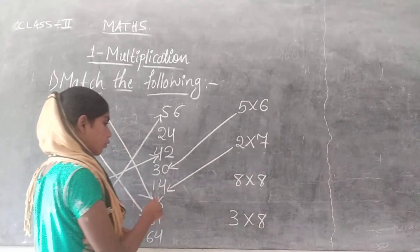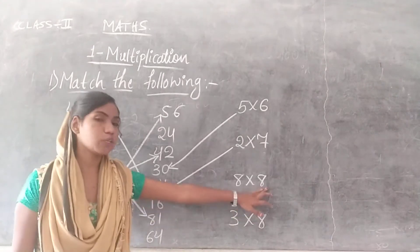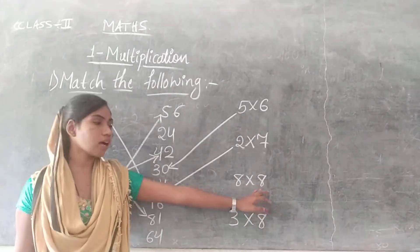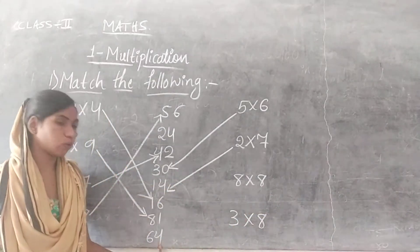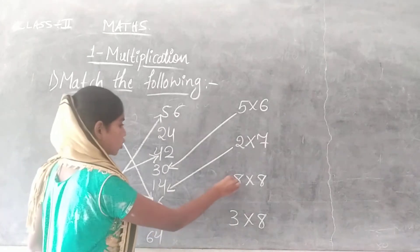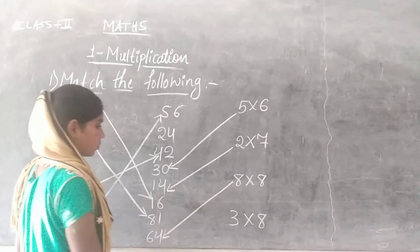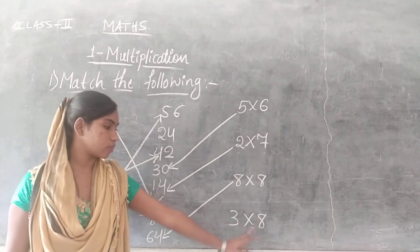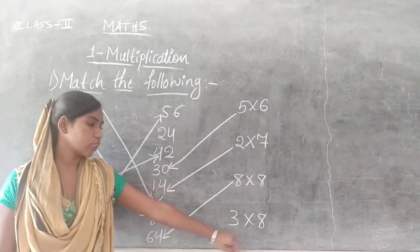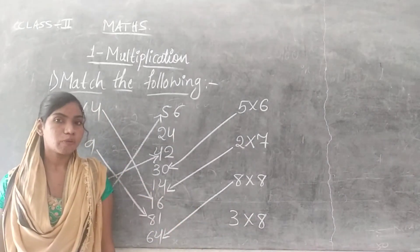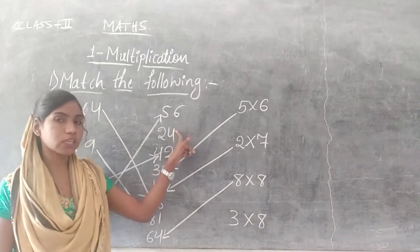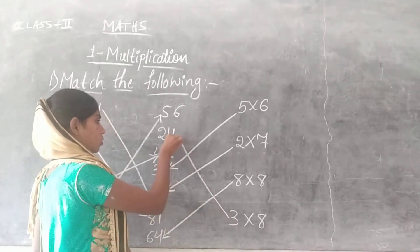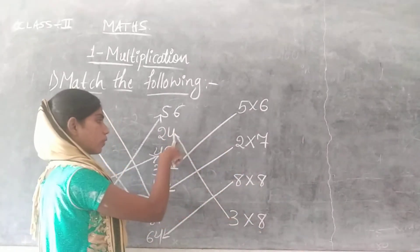2 7s are 40. And the next one is 8 into 8: 8 8s are 64. And the next one is 3 into 8: 3 8s are 24. 24 is here — match 3 into 8 to 24.